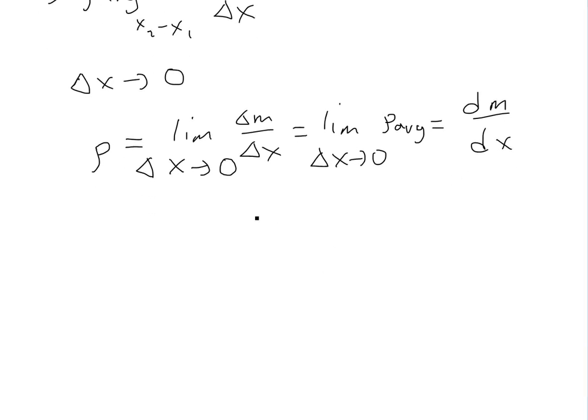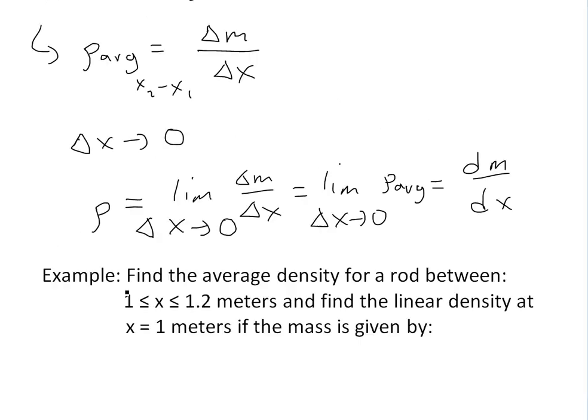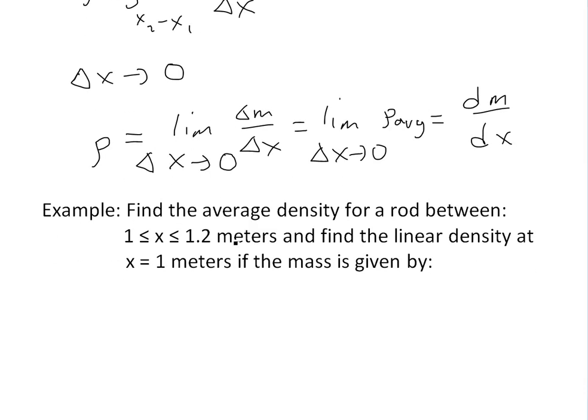So this brings us to an example. Find the average density for a rod between this length, where x is greater than or equal to 1 and less than or equal to 1.2 meters, and then find the linear density at x equals 1 meters if the mass is given by this function, m equals f of x equals square root of x.